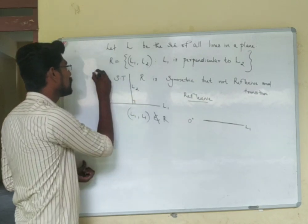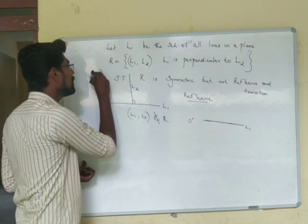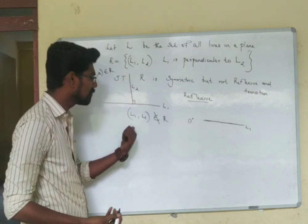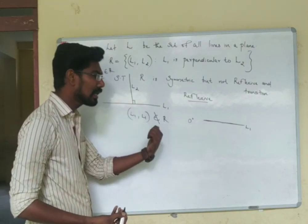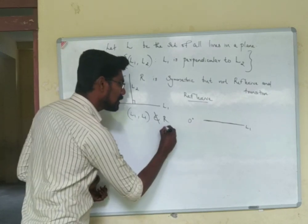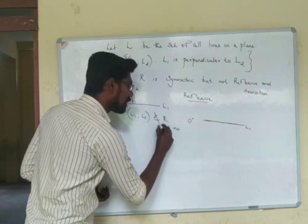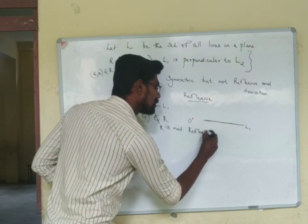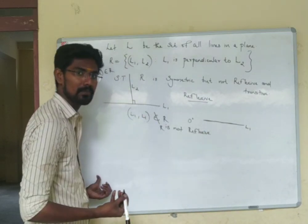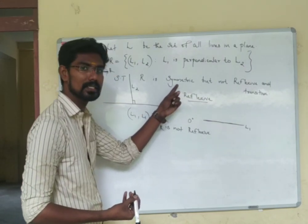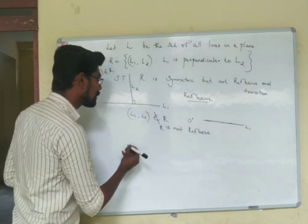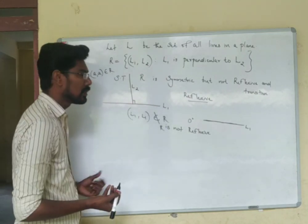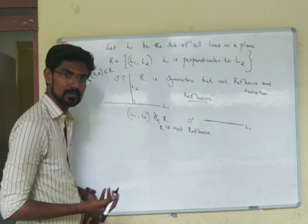Since a line cannot be perpendicular to itself — (A, A) is not in R — R is not reflexive.